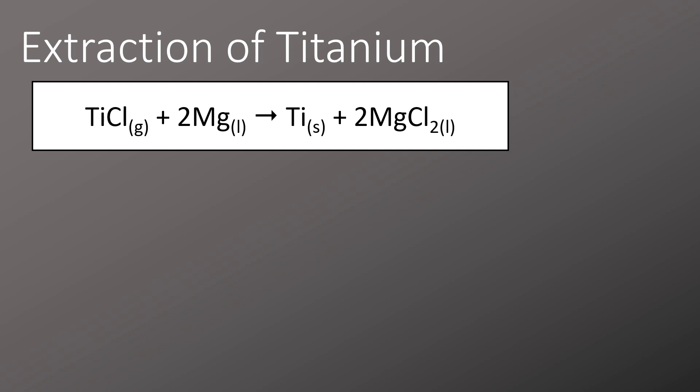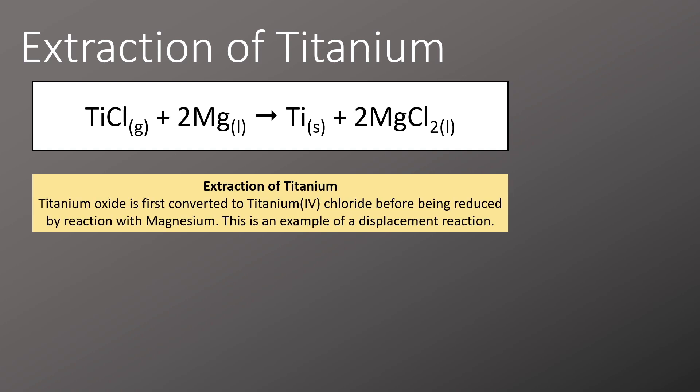Titanium oxide is first converted into titanium chloride, which is then reacted with magnesium. In this process, magnesium displaces the titanium from the chlorine, and it's an example of a reduction reaction.